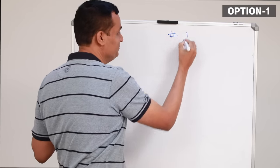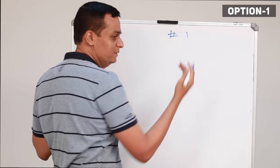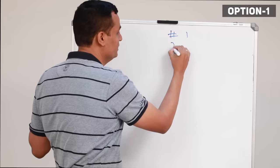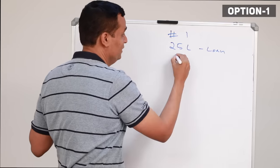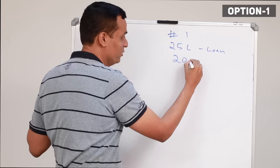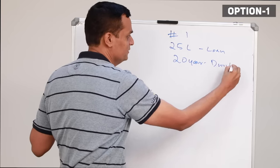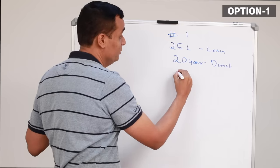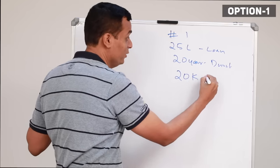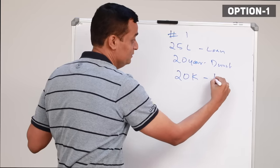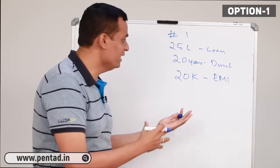Option 1 is the first scenario. The loan duration is 20 years. We are going to talk about the EMI amount in this scenario.